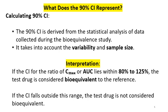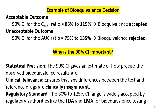For interpretation: if the CI of the ratio of Cmax or AUC lies within 80% to 125%, the test drug is considered bioequivalent with the reference. If the CI value is outside this range, the products are not bioequivalent. For example, if the 90% CI of the Cmax ratio is 85–115%, bioequivalence is accepted. But if the 90% CI for the AUC ratio is 75–135%, bioequivalence is rejected.